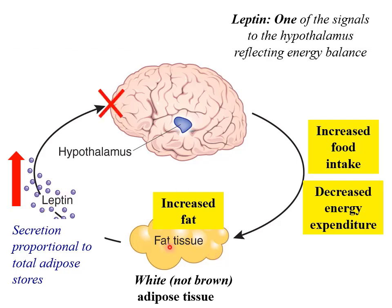You'd expect to see exactly the same thing if, rather than being unable to produce leptin, you could still produce leptin but were unable to respond to it because of a deficit in leptin receptors. In that situation, it would be as though you are leptin deficient, resulting in increased food intake, decreased energy expenditure, and increased fat.